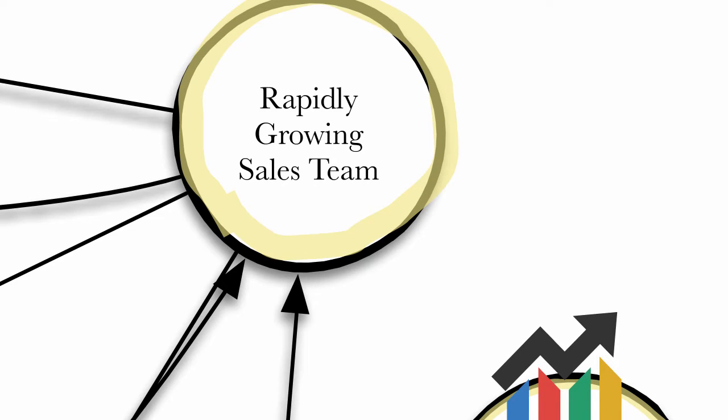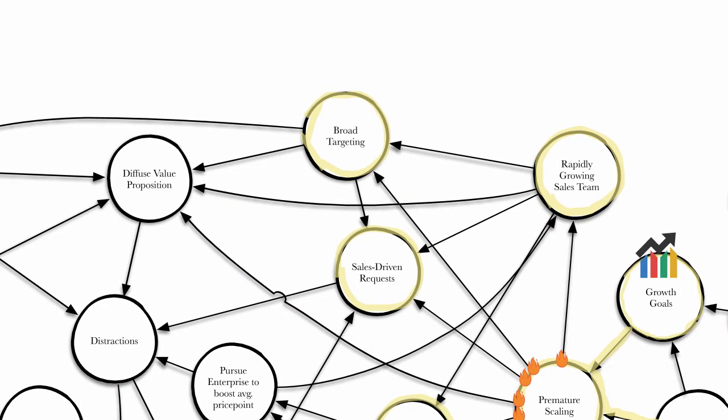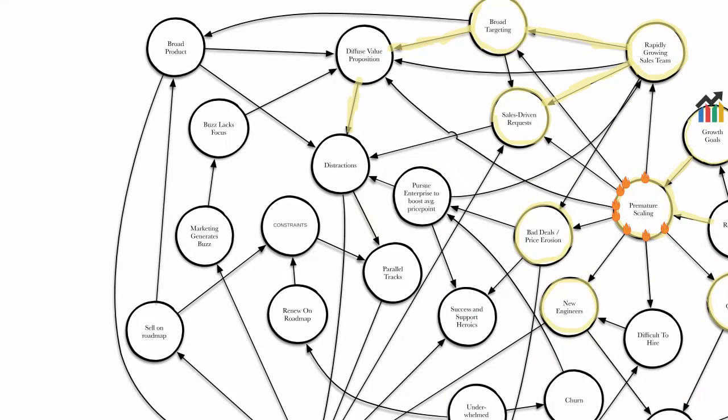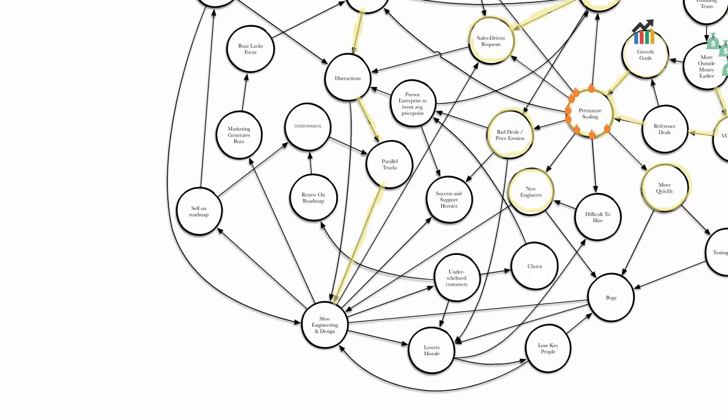As mentioned, your rapidly growing sales team, they're putting the key in it. They go for it. They target broadly. They start taking feature requests. I thought only VPs could do that, or founders. The value prop is a shotgun blast. And this leads to distractions, which causes parallel tracks. Which eventually causes engineering to slow down.